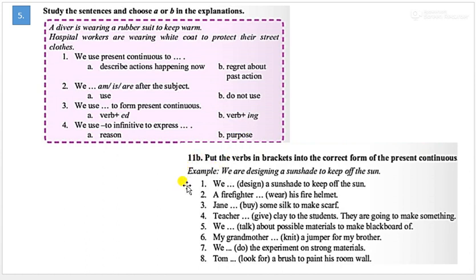You can do this exercise, 11b. You can see in your book this exercise. Put the verbs in brackets into the correct form of the present continuous. Please do this exercise. Eight exercises. First one is an example, we design a sunshade to keep off the sun. Have to change this, we are designing a sunshade to keep off the sun.